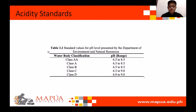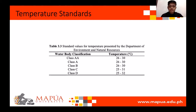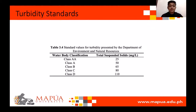pH level is a measuring parameter of alkalinity or acidity. The range is 0 to 14, where normal water has a pH level of 7. The DENR acidity standards are shown in the table. The temperature standard table shows the standard values of temperature corresponding to the water body classification given by the DENR. The turbidity standards table shows the values given by the DENR, showing water body classification's total suspended solids.